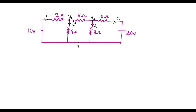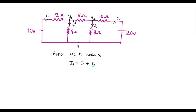Now let me apply KCL to node V1 — that is, apply Kirchhoff's current law to node V1. As per KCL, incoming current equals outgoing current. Current I1 is moving towards node V1, while I2 and I3 are leaving the node. So I1 equals I2 plus I3.